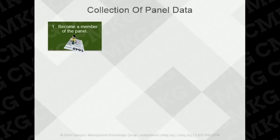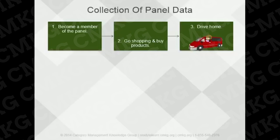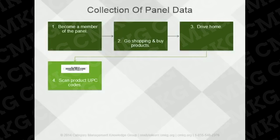Data collection for panel data is much different than retail measurement data. This is because the panel consists of shoppers living at home from many different demographic groups. First, they become members of the panel, either through being asked to participate or by requesting to participate. Next, they have to shop. Every single time they purchase anything that has a UPC code, they take it home and scan the UPC code for each item. This may include a package of gum they purchased at a gas station or a huge grocery shop that included 75 different items.